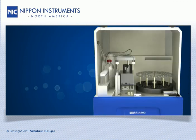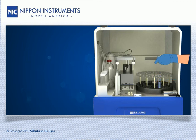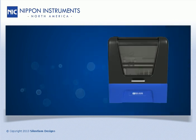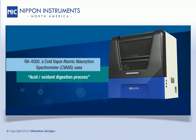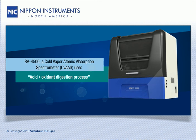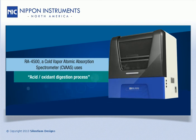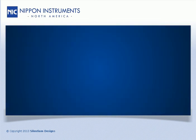With the RA4500, all you have to do is simply load your sample and the RA4500 does the rest. Using an acidic oxidation digestion process, it converts all forms of mercury in the samples to the oxidized and water-soluble inorganic species, which is then analyzed by cold vapor atomic absorption spectrometer.